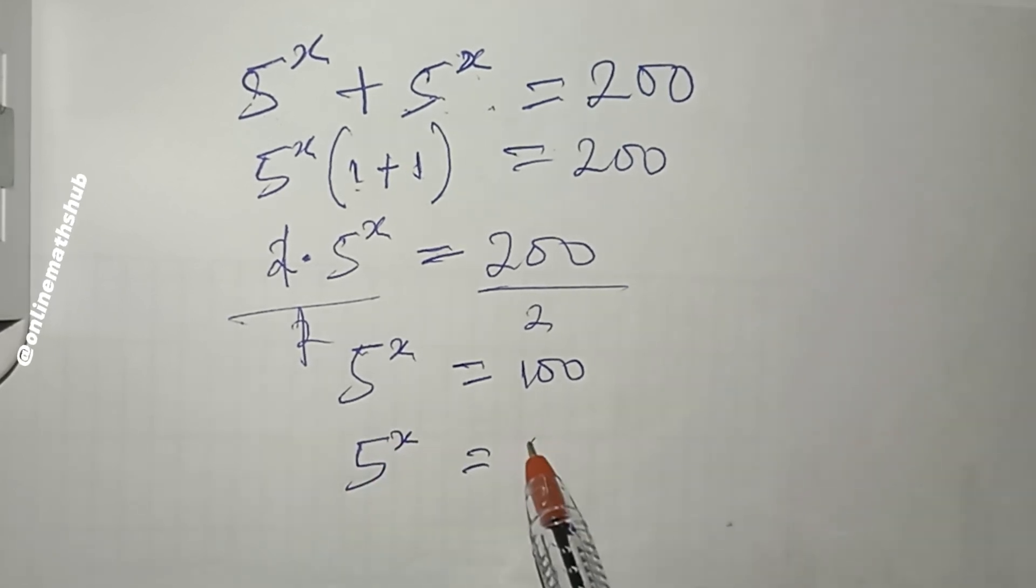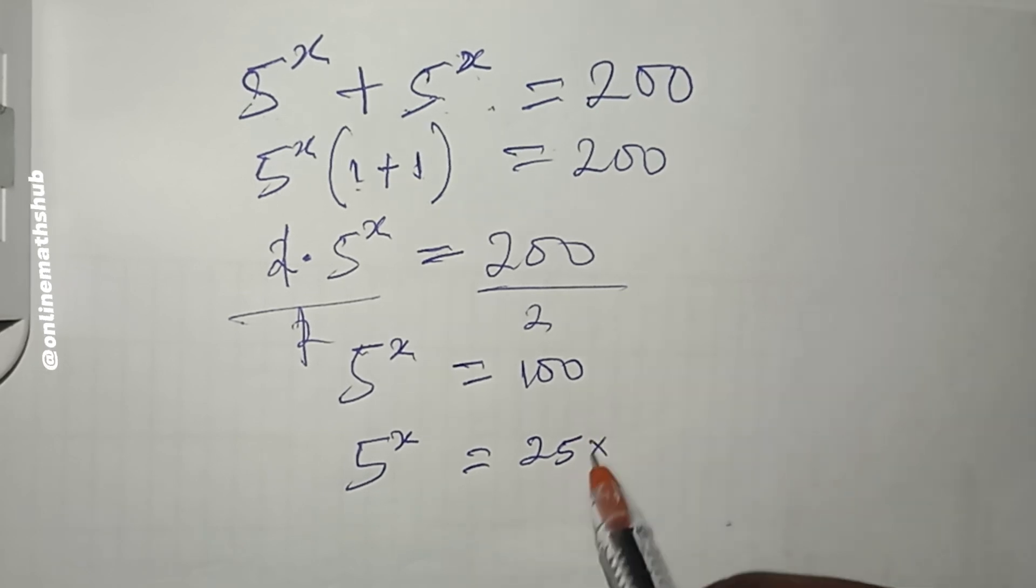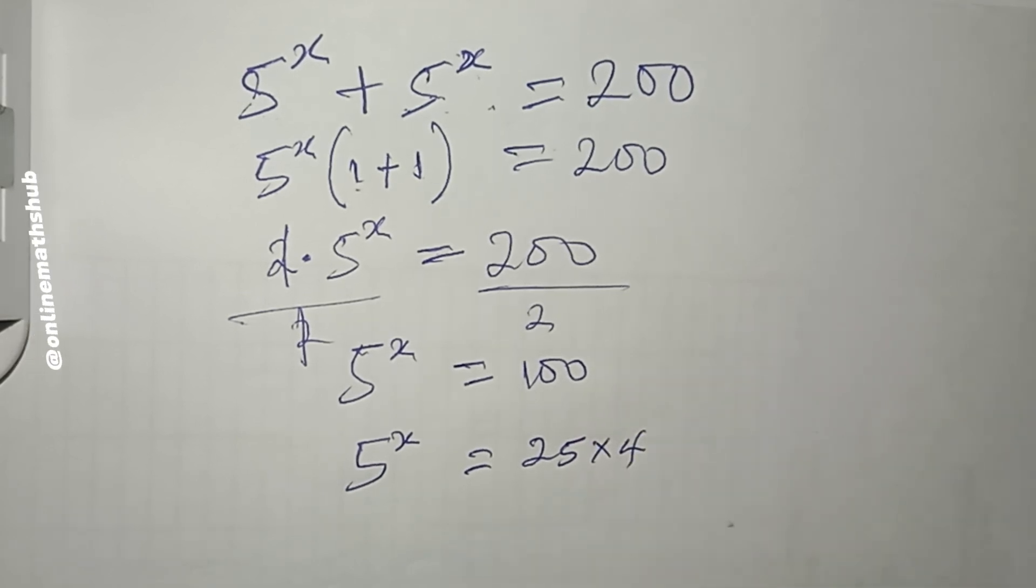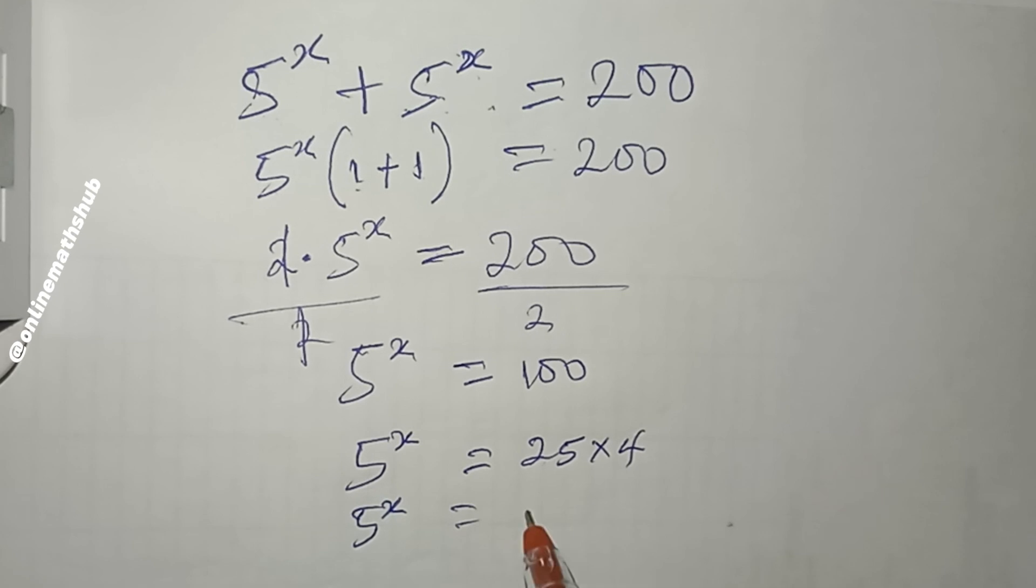If we do that, we can write 100 as 25 × 4. We can also write this 25 as 5^2 and then multiply by 4.